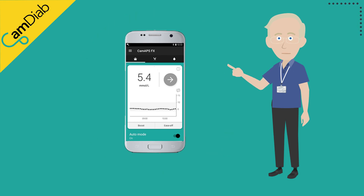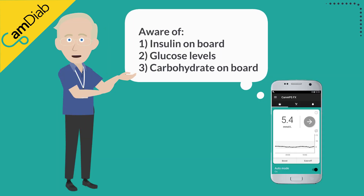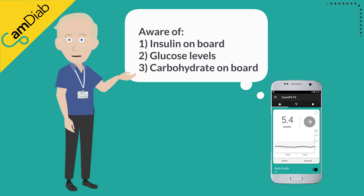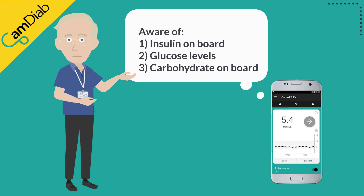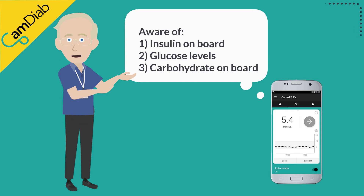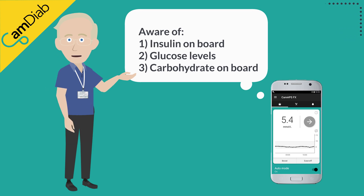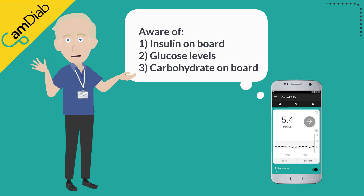CamAPS FX is always aware of: one, how much insulin is currently active, also known as insulin on board; two, what the glucose levels have been; and three, when last someone consumed carbohydrates, also known as carbohydrate on board. This information, together with the individualized learning about the person with type 1 diabetes, is used to shape the insulin delivery for the next few hours.